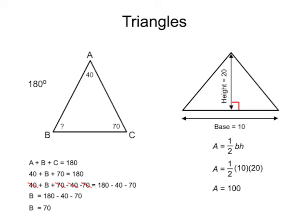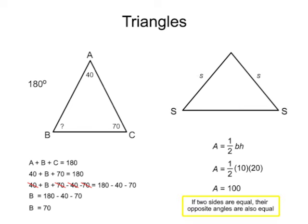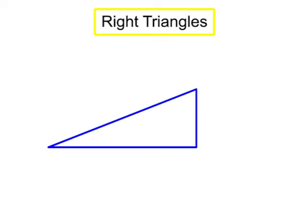Finally, for all triangles, if two sides are equal, the angles opposite those sides are also equal. Similarly, if all three sides are equal, all three angles are equal. In addition to the characteristics that all triangles share, right triangles have several characteristics that are quite unique. Before we cover the details of those characteristics, it helps to identify the various parts of a right triangle.